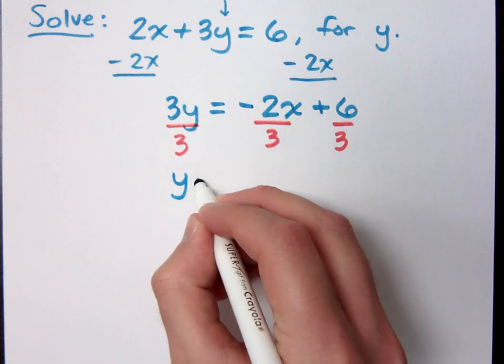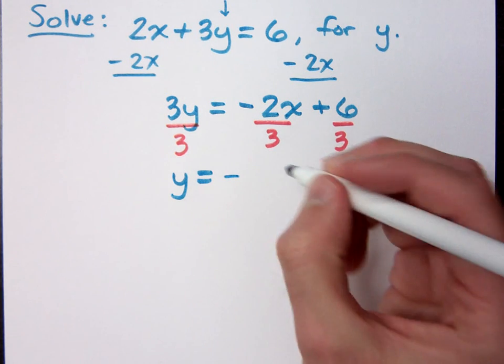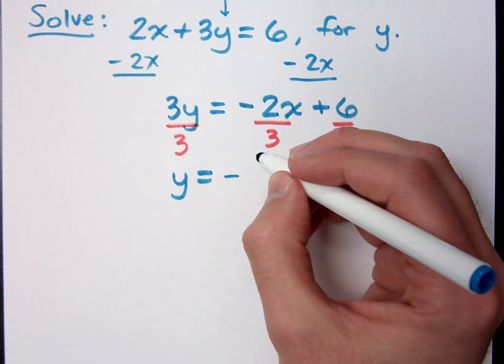So, y equals what here? Negative 2x over 3 plus 2. Okay. Now, here's one question. You said negative 2x over 3, which is great.